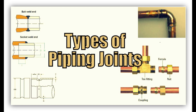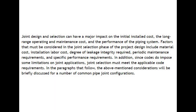Joint design and selection can have a major impact on the initial installed cost, the long range operating and maintenance cost, and the performance of the piping system. Factors that must be considered in the joint selection phase of the project design include material cost, installation labor cost, degree of leakage integrity required, and periodic maintenance requirements.